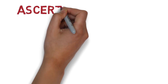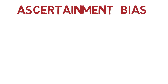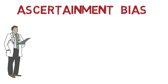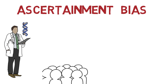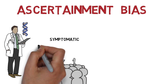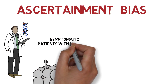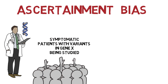This might then introduce ascertainment bias, which is the systematic over- or underestimation of the true frequency of an event due to the way the data were collected. In the case of human genetics, performing initial studies on severely symptomatic individuals and their families may introduce bias in survival forecasts.